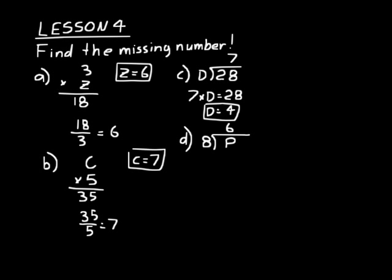Look at this problem — another division problem in long division format — but this time we don't know what the dividend is. Remember, the dividend is inside the division symbol. 8 goes into what 6 times? We multiply the quotient times the divisor: our quotient is 6 and our divisor is 8, so that equals our dividend, 48. That's what p is equal to. If you're confused about these division problems, go back to page 8 and review the boxed area showing dividend, divisor, and quotient.